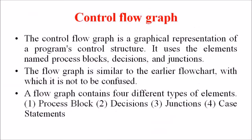The control flow graph is a graphical representation of a program's control structure. It uses the elements named process blocks, decisions, and junctions. The flow graph is similar to the earlier flowchart with which it is not to be confused.